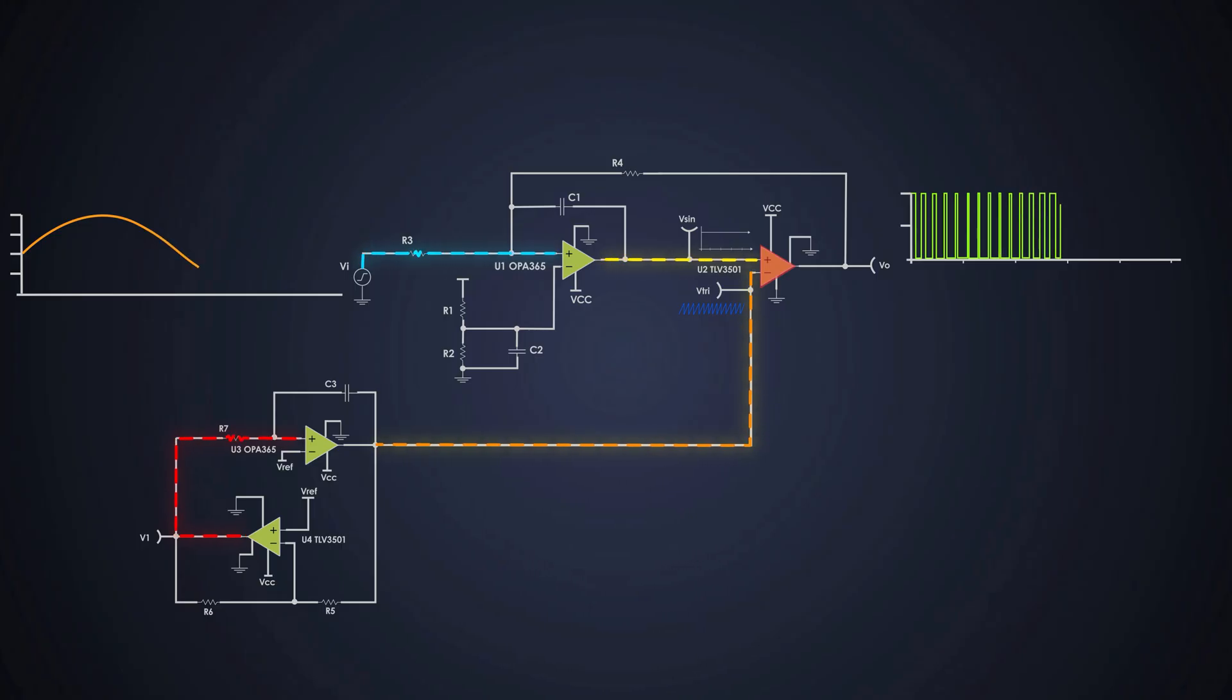If Vsin is less than Vtri, then output is low. So by doing that, we get the PWM output proportional to the input signal.